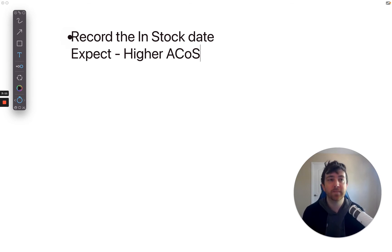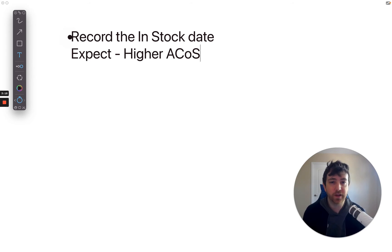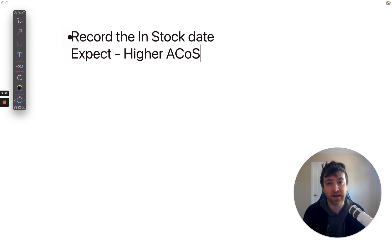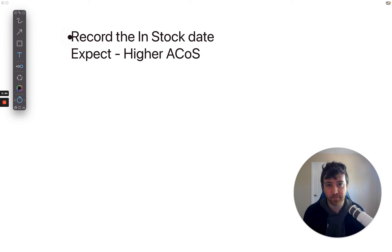One thing to note: with sponsored products, when a product runs out of stock the advertising stops. But with other ad types it might continue — with sponsored brands, for example, if you have a headline ad with five products and one runs out, that ad continues running because it has the other four products. Whereas if it only had three products — the minimum — and one ran out of inventory, that ad would stop running. Something to keep in mind when looking at your advertising.